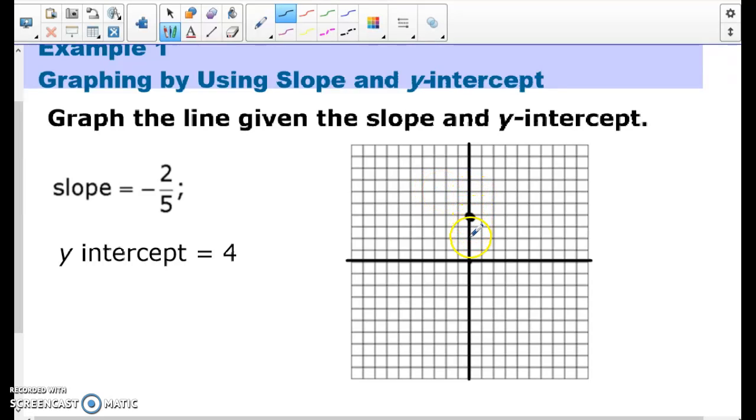Which means I'm going to be going down 2 from my y-intercept. So from that 4 spot, down 2 and to the right 5. So 1, 2, 3, 4, 5. I'm going to put a dot there. This is going to be my line. So then I connect these two dots. That's going to be my line. If Mr. Molo could draw a straight line, it would look a lot better. So that's how I'm going to be graphing from now on.